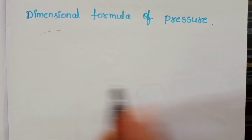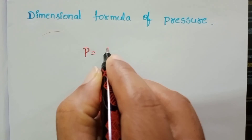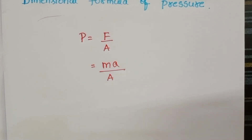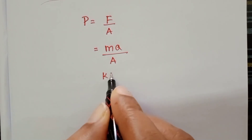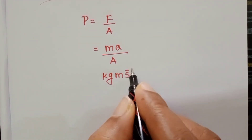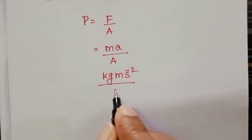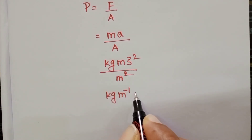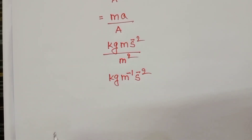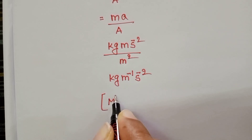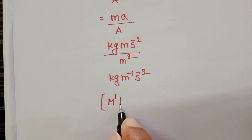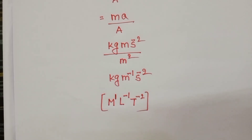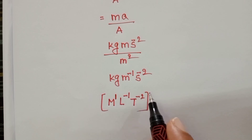The dimensional formula of pressure. Pressure is force per unit area, which we can write as mass into acceleration divided by area. The unit of mass is kg, acceleration is meter per second squared, and area is meter squared. This simplifies to kg times meter power minus 1 times second power minus 2. So the dimensional formula of pressure is M¹L⁻¹T⁻².